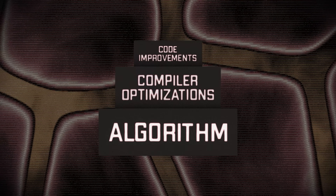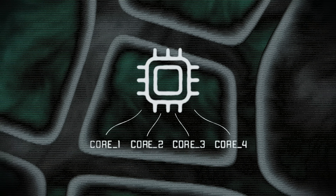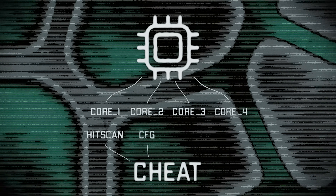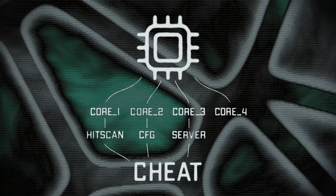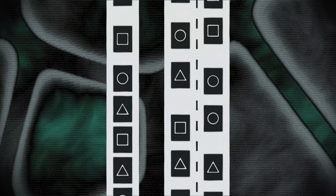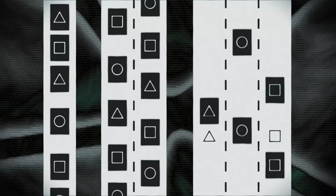Processors have multiple cores, enabling them to perform several tasks simultaneously. Using parallel computations and multi-threading can significantly boost application performance. For instance, in a cheat, hit scans for each player can be handled in separate threads, while saving and loading settings can be moved to another thread. Resource-intensive tasks not directly interacting with gameplay — such as server communication or retrieving new chat messages — can be delegated to background threads. Proper multi-threading requires meticulous planning to avoid conflicts, like an orchestra where each musician plays their part simultaneously under the conductor's guidance.